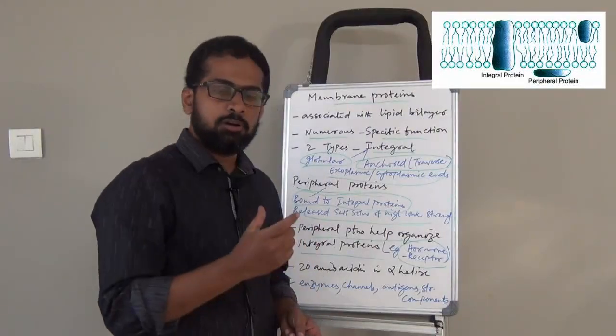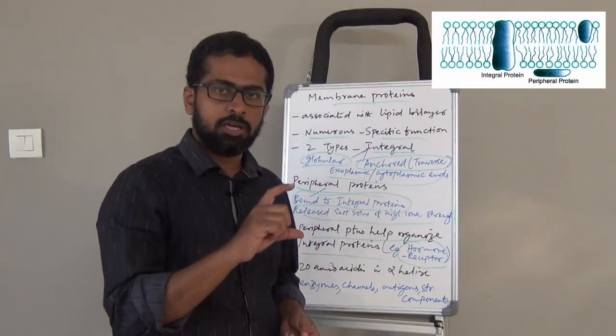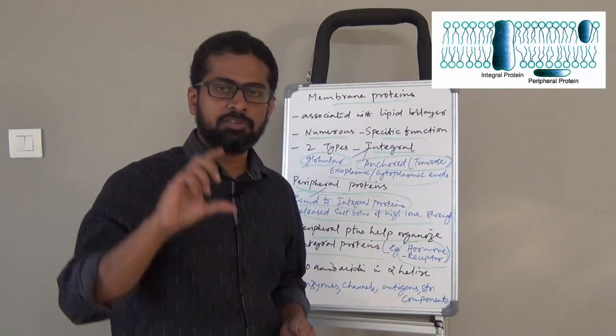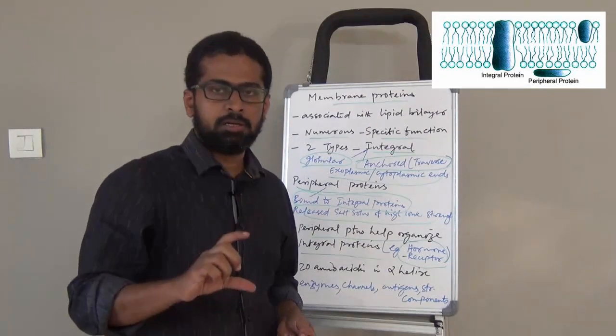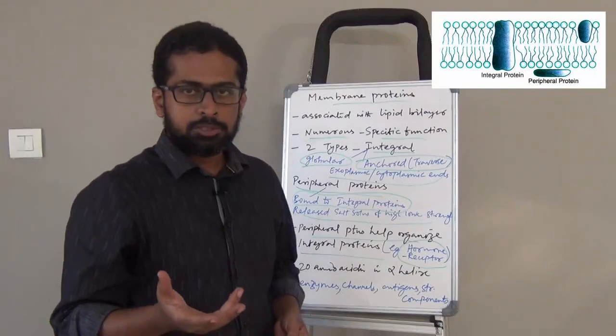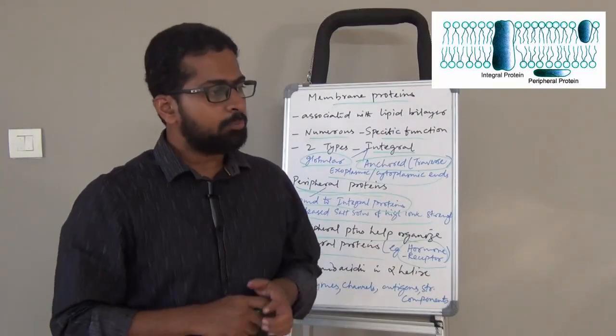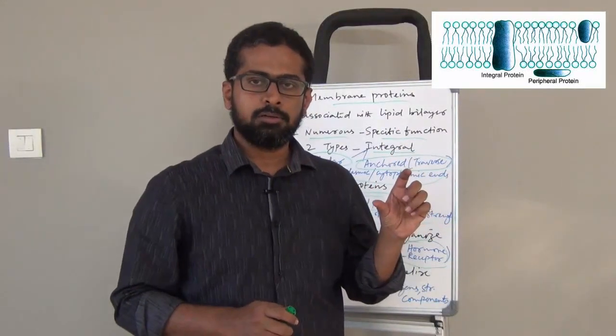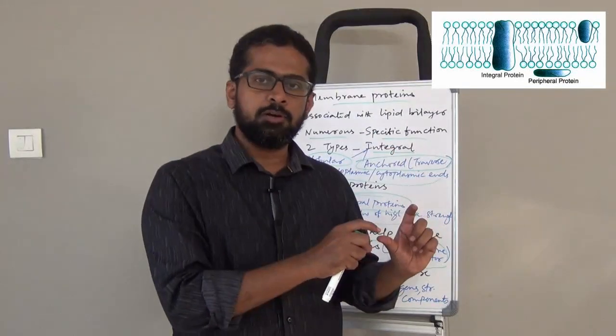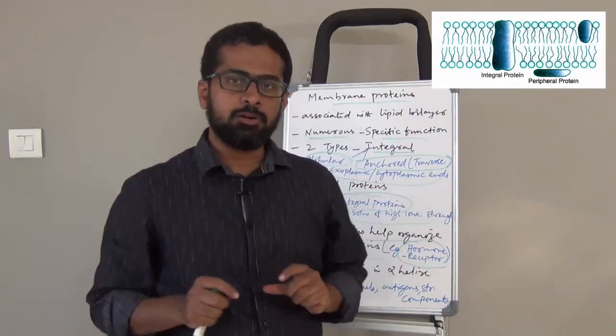A stretch of 20 amino acids in an alpha helix will be enough to traverse the entire membrane. It is possible to calculate whether a particular sequence of amino acids is consistent with the transmembrane domain.